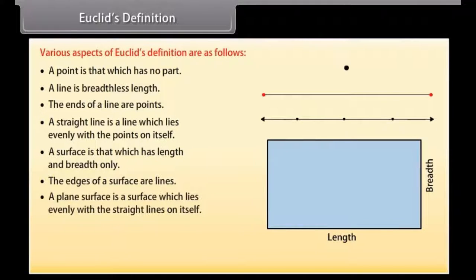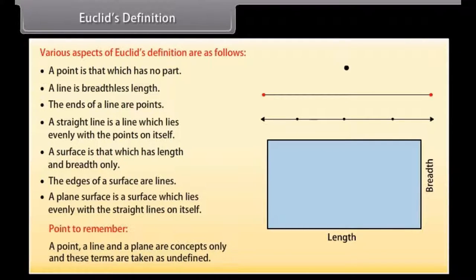A surface is that which has length and breadth only. The edges of a surface are lines. A plain surface is a surface which lies evenly with the straight lines on itself. Point to remember: A point, a line and a plane are concepts only and these terms are taken as undefined.